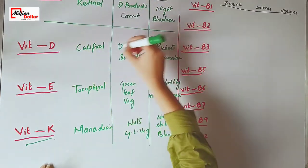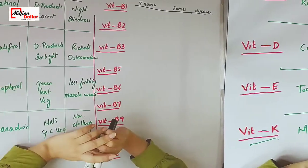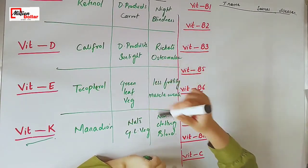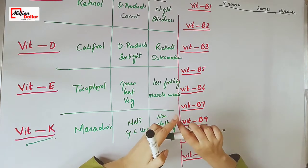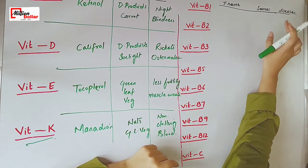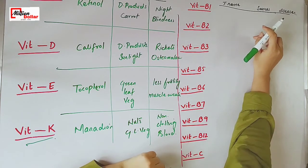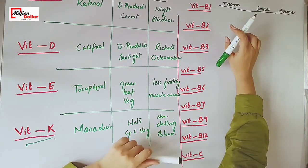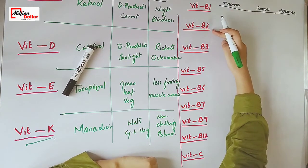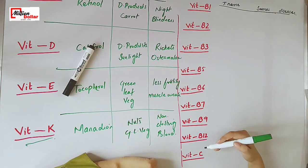I think it's the easiest way of remembering the technical name, the sources, and the diseases of all these vitamins. Now that we have discussed the fat-soluble vitamins in detail, let us discuss the water-soluble vitamins — the technical name, sources, and diseases caused by the deficiency of vitamins B and C. Vitamin B includes B1, B2, B3, B5, B6, B7, B9, B12, and B17.